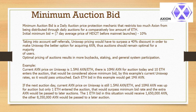Minimum Auction Bid is a daily auction price protection mechanic that restricts too much Axion from being distributed through daily auctions for a comparatively low amount of ETH. The initial minimum bid equals the 7-day average price of Hex2T before mainnet launches minus 10%. Taking into account self-referrals, Uniswap pricing would have to surpass a 40% discount in order to make Uniswap the better option for acquiring AXN. Thus, auctions should remain optimal for a majority of users. Optimal pricing of auctions results in more buybacks, staking, and general system participation.